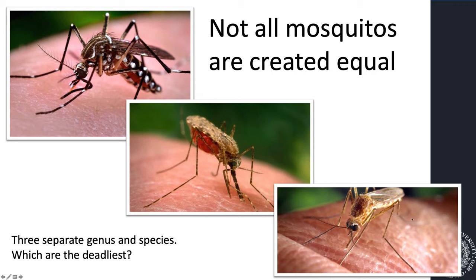At the bottom right is a Culex mosquito. It's primarily a nuisance biting mosquito, but it can transmit diseases like West Nile virus and Eastern equine encephalitis that we have here in upstate New York. The top left is an Aedes albopictus mosquito, also called the Asian tiger, and it can transmit diseases like dengue, Zika, and chikungunya.